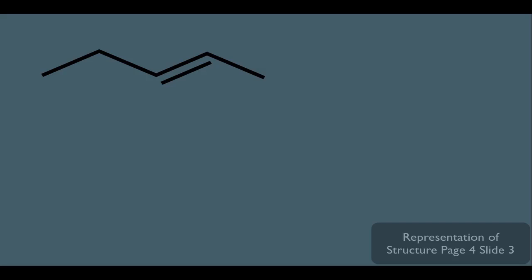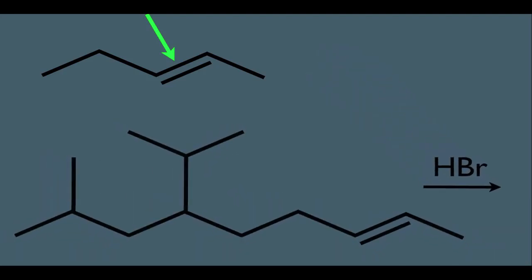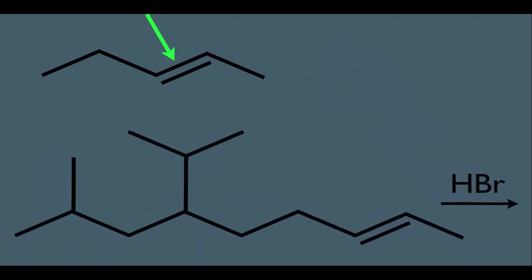For instance, we'll take this molecule and they'll ask us what is the product when we react it with HBr. What we're going to learn is that HBr is only reactive with this part of the molecule right here where the double bond is. This is advantageous because, if you have some big complex molecule and we're trying to figure out the product with HBr, we know to only focus on this part of the molecule and we can ignore the rest.